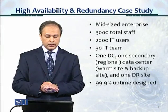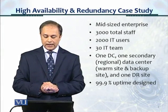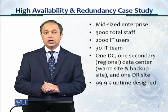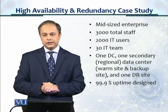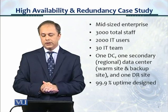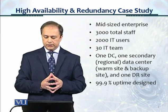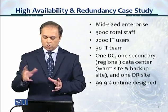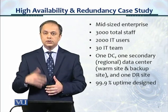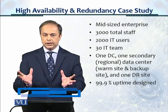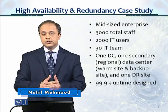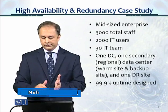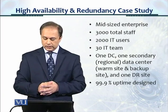In this module, we'll take a look at a high availability and redundancy case study for a mid-sized enterprise organization, which has about 3,000 total staff, 2,000 IT users, about 30 people in the IT team, one primary data center, one secondary regional data center which is a warm site and backup site, and one separate DR site — so three data centers overall. This case study was planned and designed on a 99.9%, or three nines, uptime.